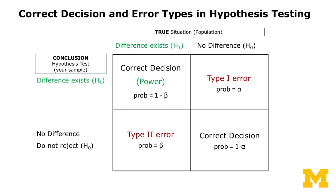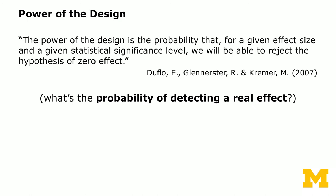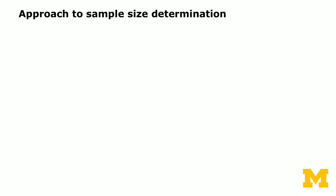This is the overview of error types in hypothesis testing for experiment design. The power of a design is the probability that, for a given effect size and significance level alpha, you will reject the hypothesis of zero effect when a treatment effect actually exists — in other words, the probability of detecting a real effect. If your treatment can produce an effect but your design is underpowered, you waste resources running an experiment that doesn't detect the effect.